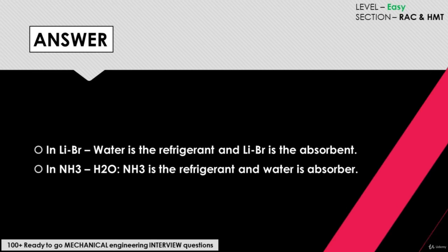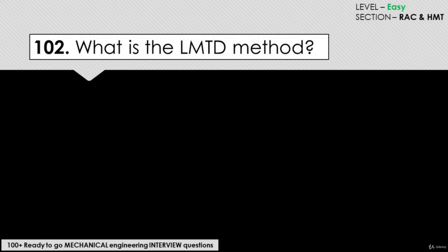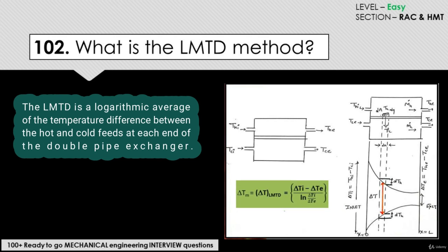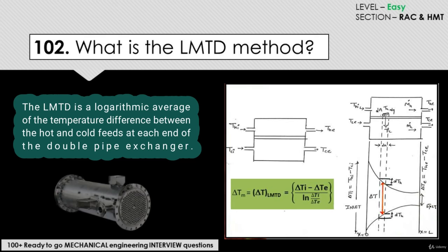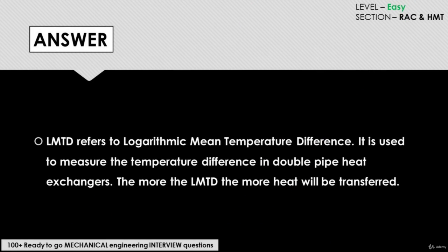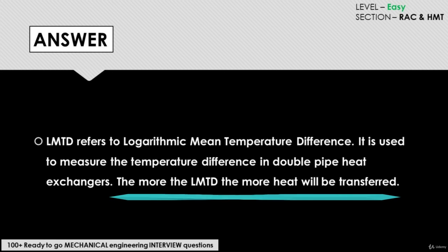What is the LMTD method? The LMTD is a logarithmic average of the temperature difference between the hot and cold feeds at each end of a double pipe exchanger. For a given heat exchanger with constant area and heat transfer coefficient, the larger the LMTD, the more heat is transferred. LMTD refers to logarithmic mean temperature difference, used to measure the temperature difference in a double pipe heat exchanger.